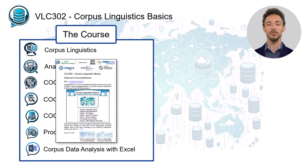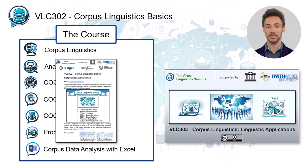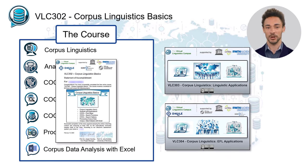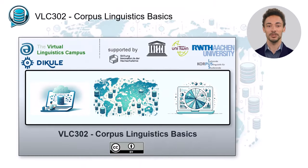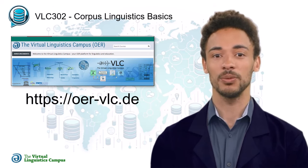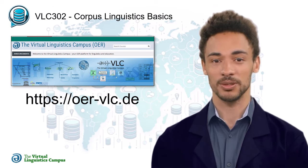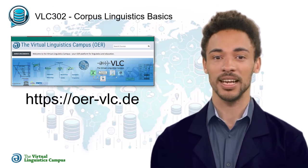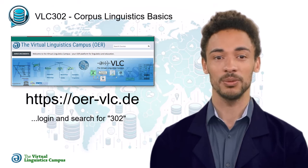And if successful, you have three options. You can expand your skills in linguistic applications, in which case VLC 303 would be your choice. You can concentrate on EFL applications and go on with VLC 304. But you can also stop here without any specialization. Whatever your decision is, with VLC 302 you have a good basis for further studies in corpus linguistics. So, sign up today and let's explore the world of corpus linguistics.